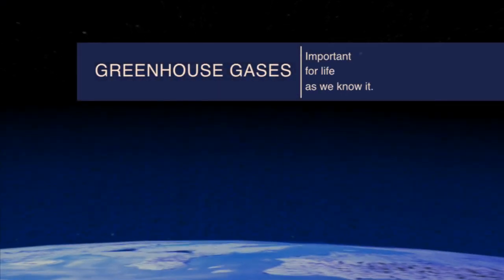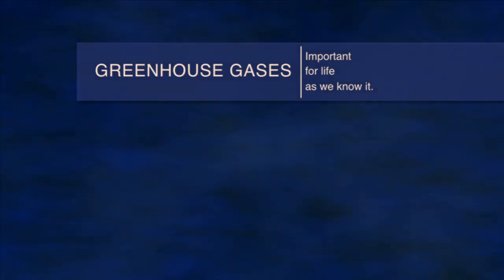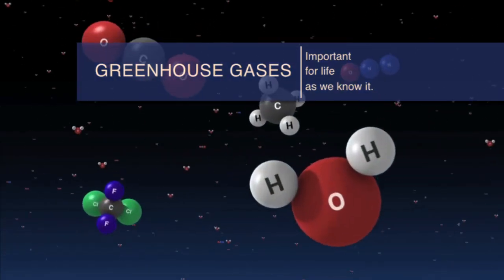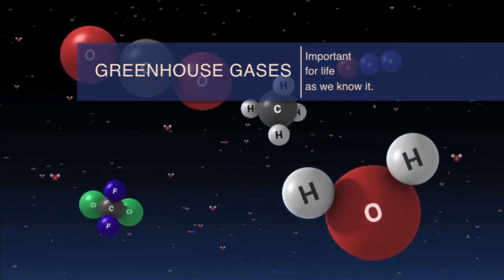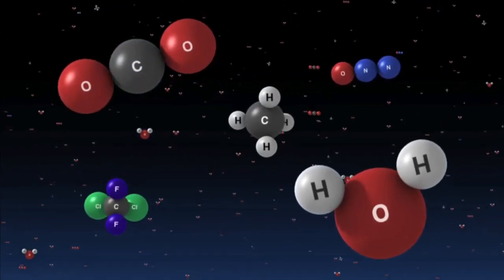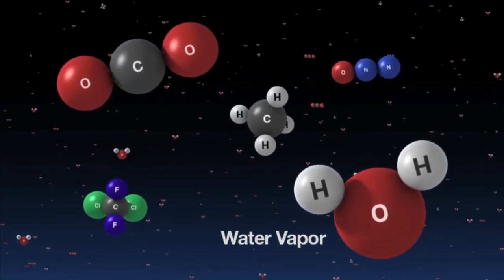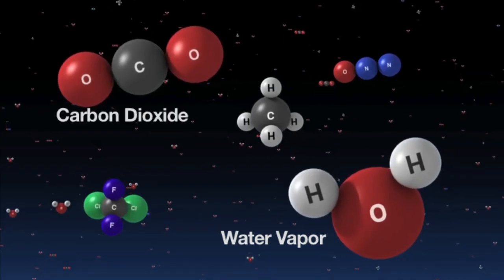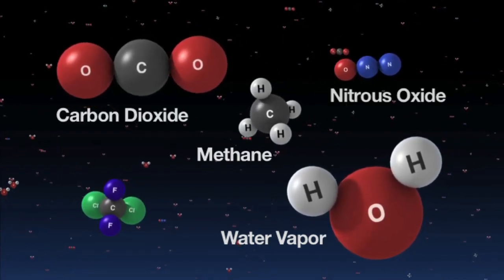How do we know that greenhouse gases lead to warming? As early as the 1820s, scientists began to appreciate the importance of certain gases in regulating the temperature of Earth. Greenhouse gases, which include water vapor, carbon dioxide, methane, and nitrous oxide,